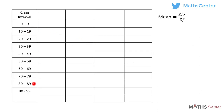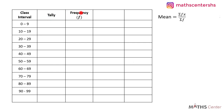So we have our table here. The class intervals are 0 to 9, 10 to 19, 20 to 29, continuing up to 90 to 99. The next column is for the tally, followed by a column for the frequencies giving the f values. Then a column for the class midpoints giving the x values, and the last column for the fx values, because we need sigma fx to find the mean.